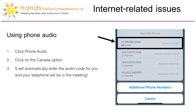When using phone audio: number one, click Phone Audio; number two, click on the Canada option; and number three, it will automatically enter the audio code for you and your telephone will be in the meeting.